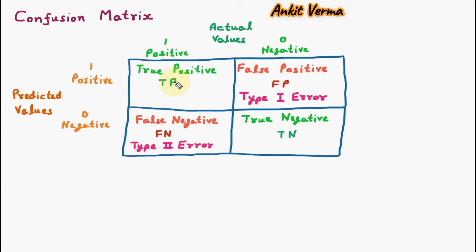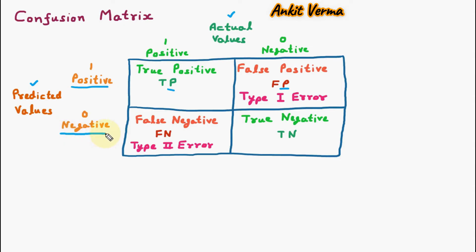So here we have learned the confusion matrix, in which on one side we are having the predicted values which can be positive and negative, also called 1 or 0. On the other side we are having the actual values which can be positive and negative, or 1 or 0. Predicted values are represented with positive and negative. Actual values are represented with true and false. To easily learn the confusion matrix, just focus on the predicted values — the positive row will have both cells ending with positive, and the negative row will have cells ending with negative.